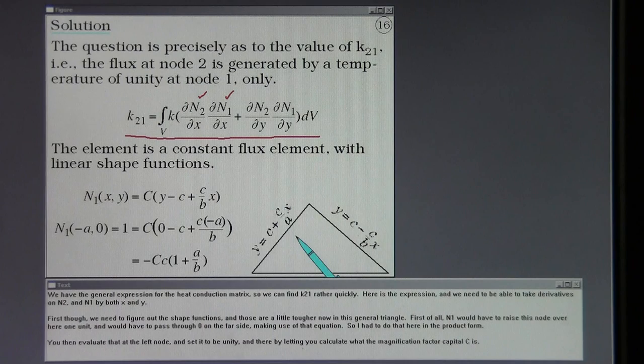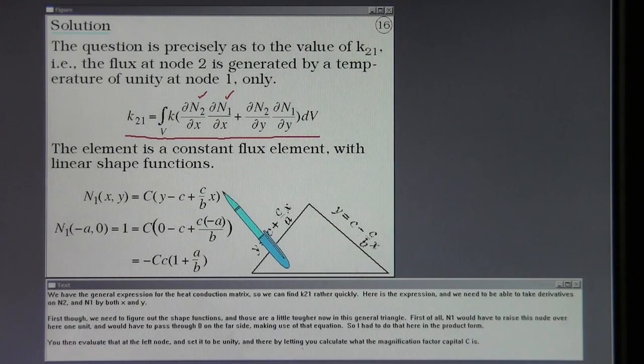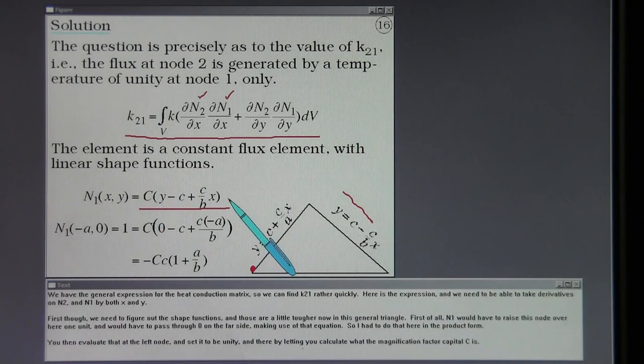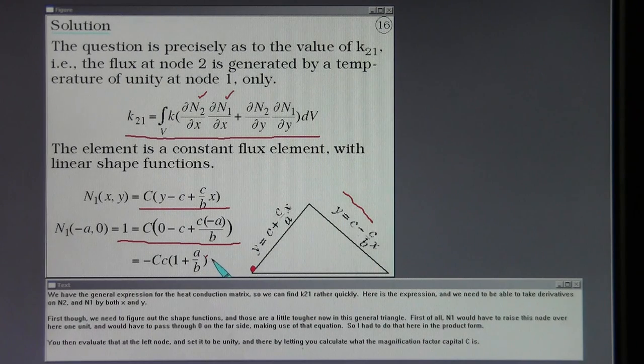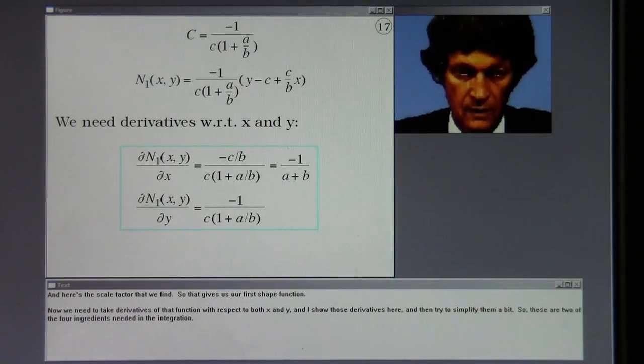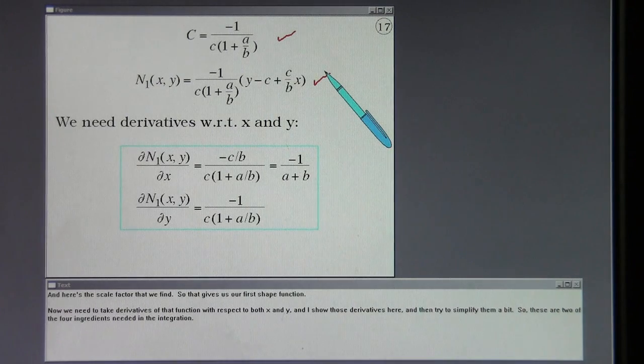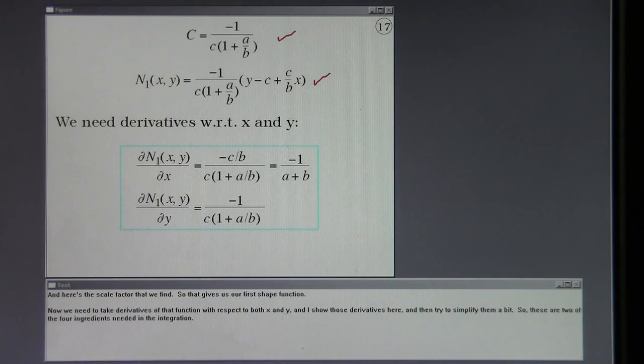We have the general expression for the heat conduction matrix so we can find K21 rather quickly. Here is the expression and we need to be able to take derivatives on N2 and N1 by both X and Y. First we need to figure out the shape functions, and those are a little tougher in this general triangle. N1 would have to raise this node 1 unit and would have to pass through 0 on the far side making use of that equation. You do that in the product form. You then evaluate that at the left node and set it to be unity, thereby letting you calculate what the magnification factor capital C is. Here's the scale factor that we find, so that gives us our first shape function. We need to take derivatives of that function with respect to both X and Y and I show those derivatives here and then try to simplify them. These are two of the four ingredients needed in the integration.